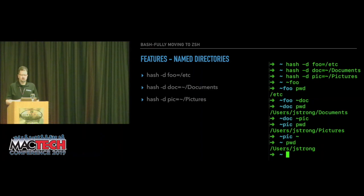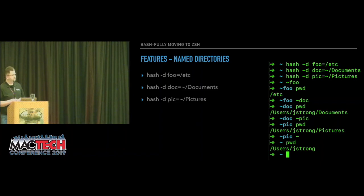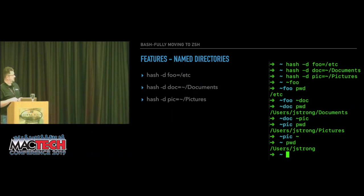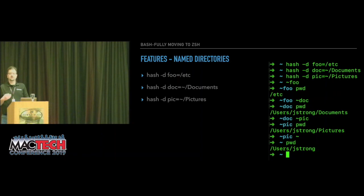Z shell also has named directories, which allows you to set up shortcuts to certain directories. You access them by prefacing with a tilde. In this example: you can link `foo` to `/etc`, `doc` to Documents, and `pic` to Pictures using the hash command. Now you can type `~foo` and if you do `pwd` you'll see you're in `/etc`, and your prompt — because you've set up a name directory — actually shows it as `~foo` instead of the actual present working directory.